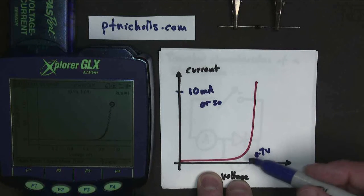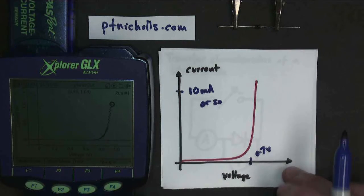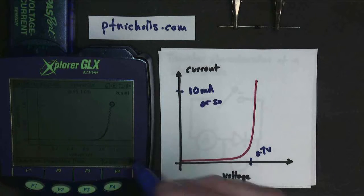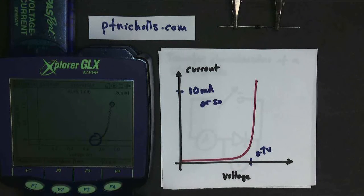But for small currents, this is the correct graph, and 0.7 volts is the correct voltage. This graph I've drawn here is only looking at this part of my data logger.